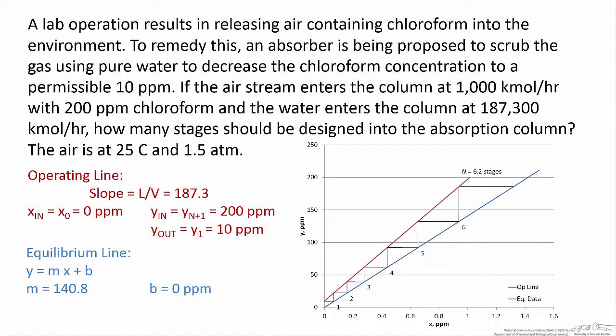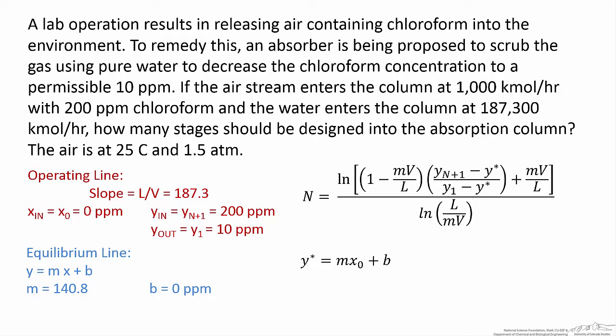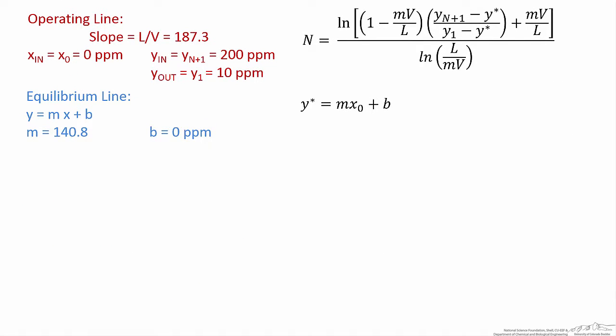Now that we've fully defined both the operating line and the equilibrium line in terms appropriate for a Kremser analysis, let's turn our attention to the Kremser equation appropriate for this system. We're asked to find the number of equilibrium stages required, and this particular Kremser equation gives us the solution in that form. The first thing I'm going to do is evaluate the y* term — taking the slope m and intercept b from the equilibrium line and inserting the inlet condition for the water stream, which is 0 ppm. Once we make those substitutions, we find that y* equals 0 parts per million.